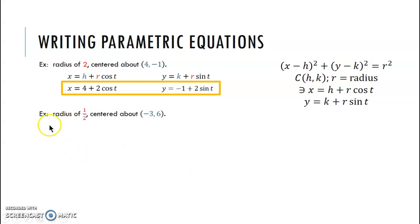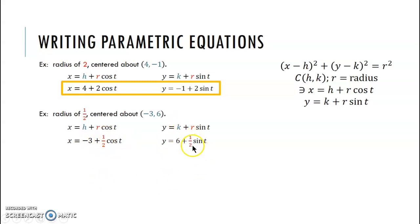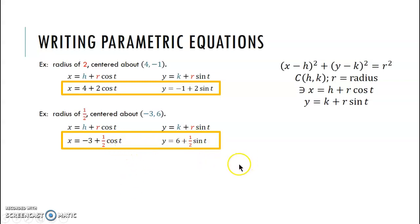Let's try another example: radius of 1/2, centered at (−3, 6). We have r = 1/2, h = −3, k = 6. Plugging in: x = −3 + (1/2)·cos(t), y = 6 + (1/2)·sin(t). Those are the two parametric equations for finding x and y in terms of the parameter t.